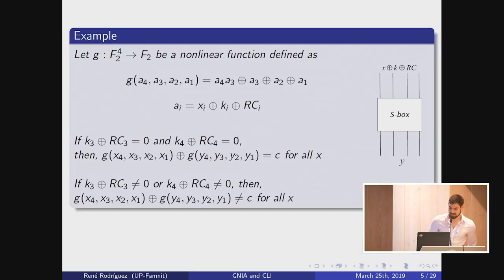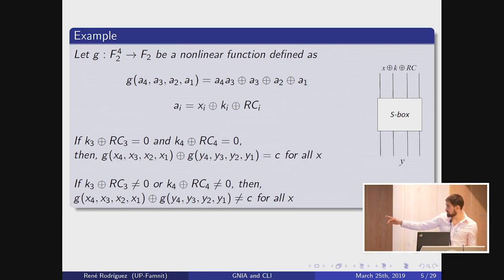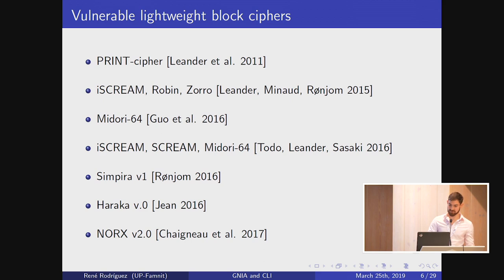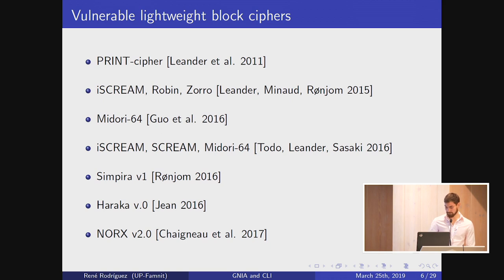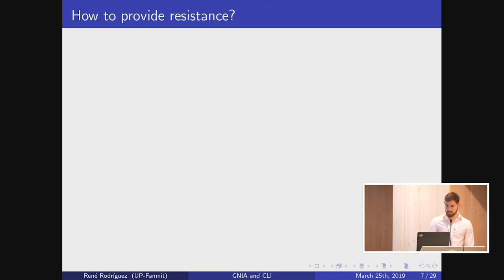An example nonlinear function is defined as follows: if the addition of the key and round constants satisfies certain conditions, you can have this invariant relation. Some vulnerable lightweight block ciphers include PRINT cipher, ICE CREAM, ROBIN, ZORRO, Midori-64, SIMPER, HARAKA, and ARCS, among others — Midori-64 in particular has notable vulnerability.